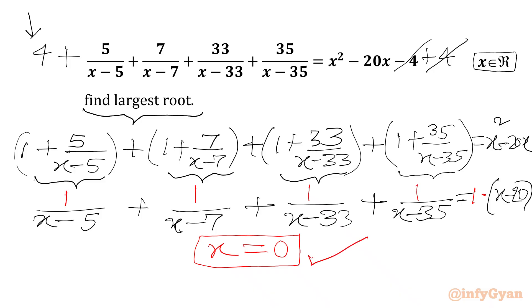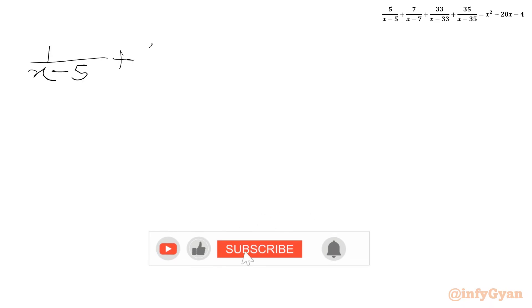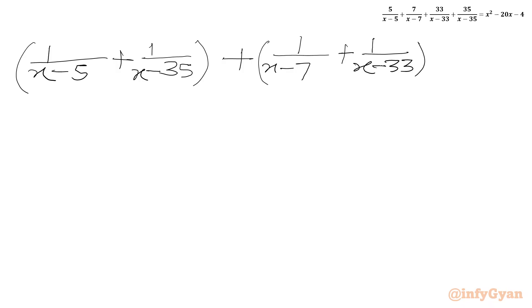So our first real solution is x equal to 0. Now we are going to club the first and fourth terms of the LHS together, and the second and third terms of the LHS together. So we can write: 1 over (x minus 5) plus 1 over (x minus 35), then 1 over (x minus 7) plus 1 over (x minus 33). In the RHS we will write x minus 20.